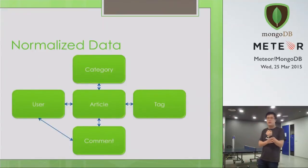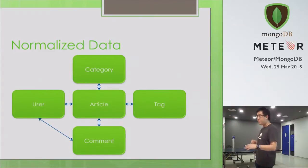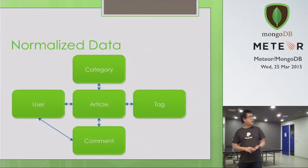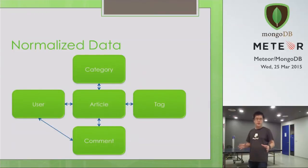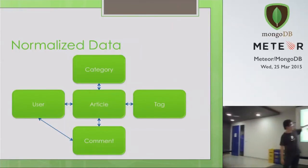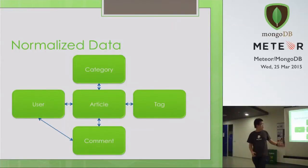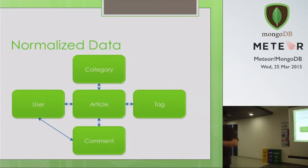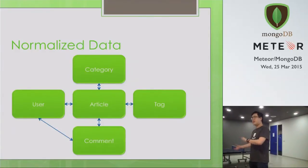For normalized data, let's look at the difference between normalized and denormalized data. For your regular RDBMS — how many of you have used RDBMS before? Good, so you've used both. Let's take a blog for example: if you're creating a blog, you probably need five different tables — one for your article, one for your user, one for your comments, one for categories, and one for tags. You need foreign keys to join all these tables together so that when you need a blog post, the database can join everything and get your data out.